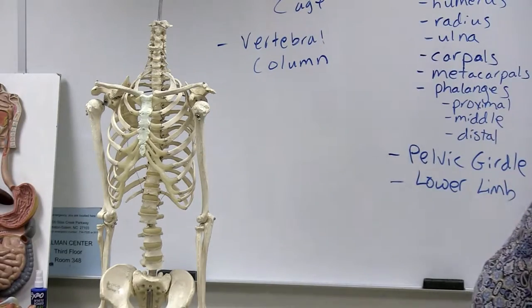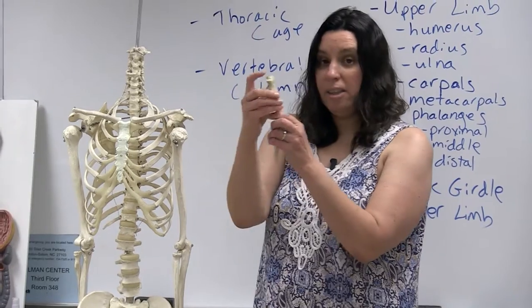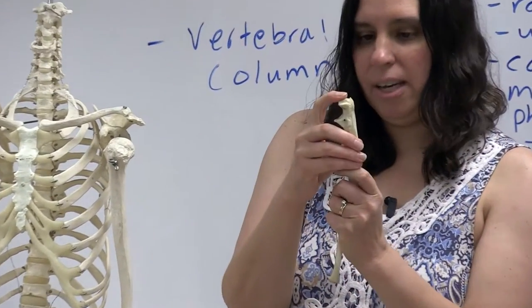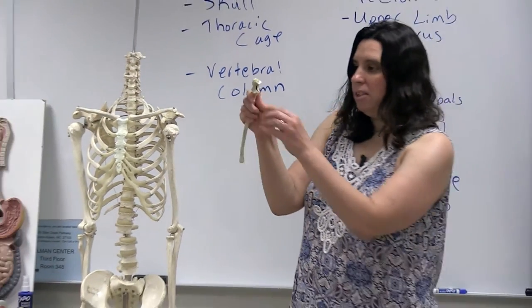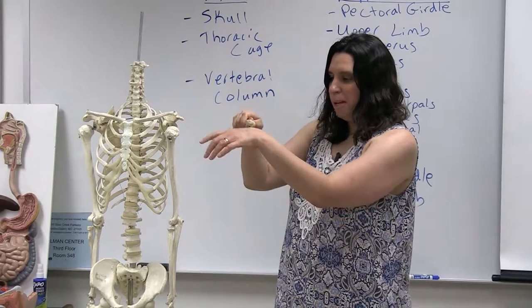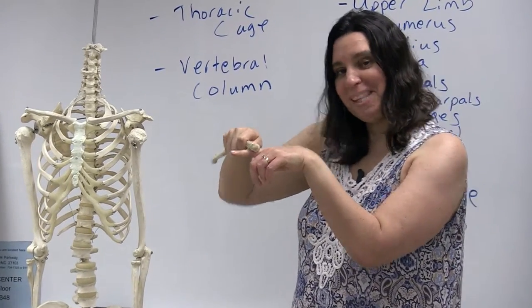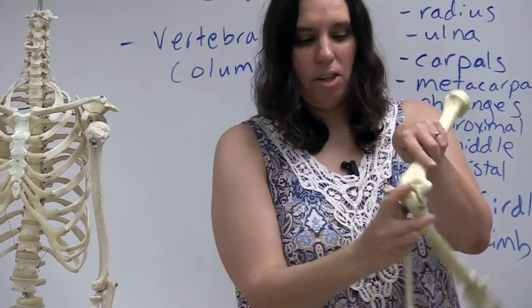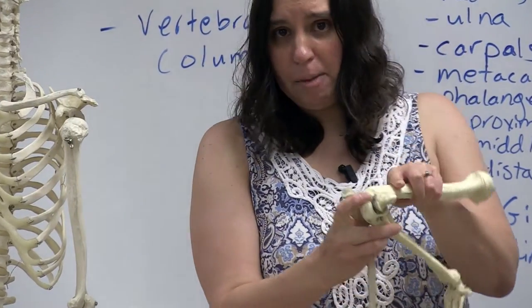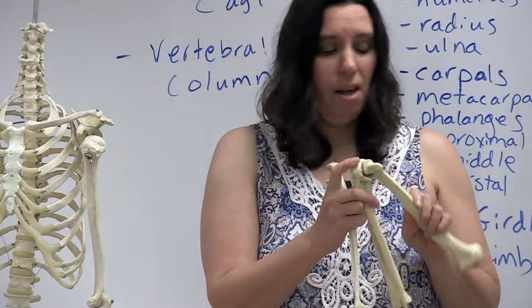Looking at the ulna, there's this large point — the point of your elbow — called the olecranon, which fits into the olecranon fossa of the humerus. Another feature is the trochlear notch, which rotates around the trochlea of the humerus. Keep in mind that 'trochlea' actually means pulley, so the trochlea of the humerus looks like a pulley-shaped figure.